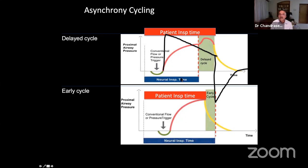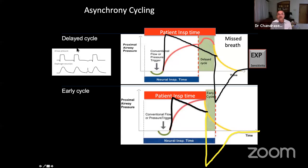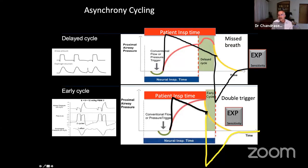An example of cycling asynchrony: when the patient's neural inspiratory time ends here but the ventilator's expiratory sensitivity is set later, the patient contracts the diaphragm at end of neural inspiration while the ventilator is still delivering flow — causing delayed cycling and missed breaths. Conversely, if the ventilator cycles off too early, the patient continues contracting and triggers a double breath. Adjusting expiratory trigger sensitivity resolves both problems.